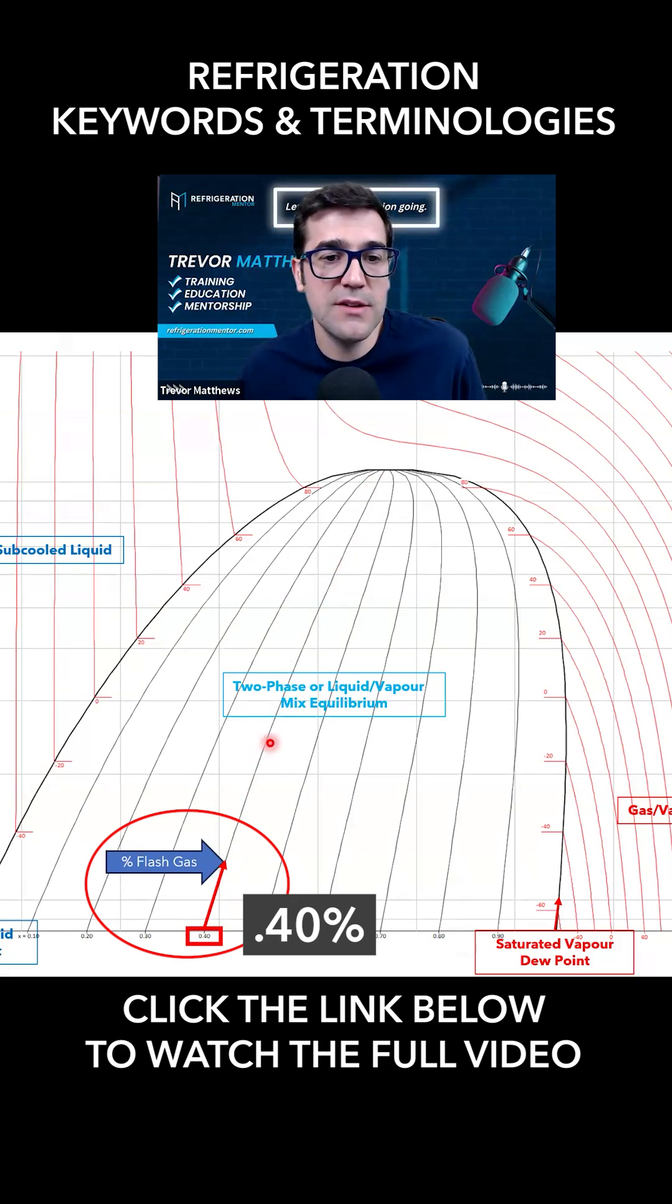There's 60% liquid. But as we start to move along here and get closer to that saturated vapor line, like this line right here, it would be 90% flash gas if we land right about here. And as we go all the way down here, this would be 10% flash gas or vapor in that two-phase mixture.